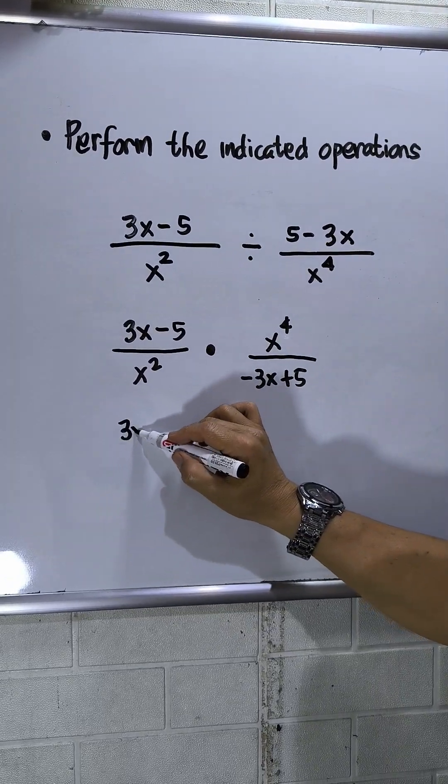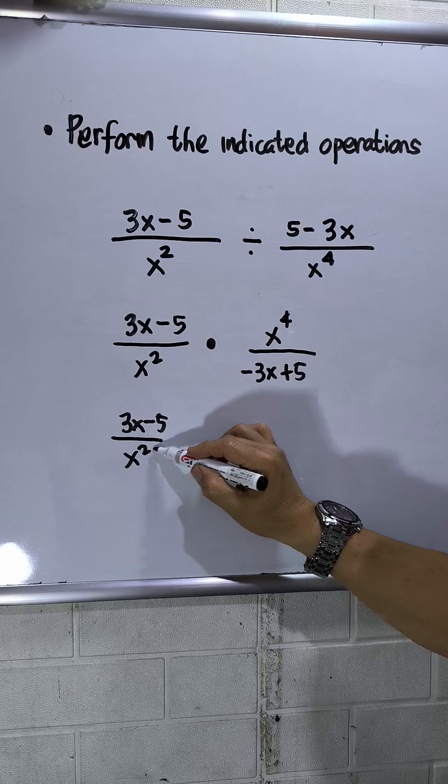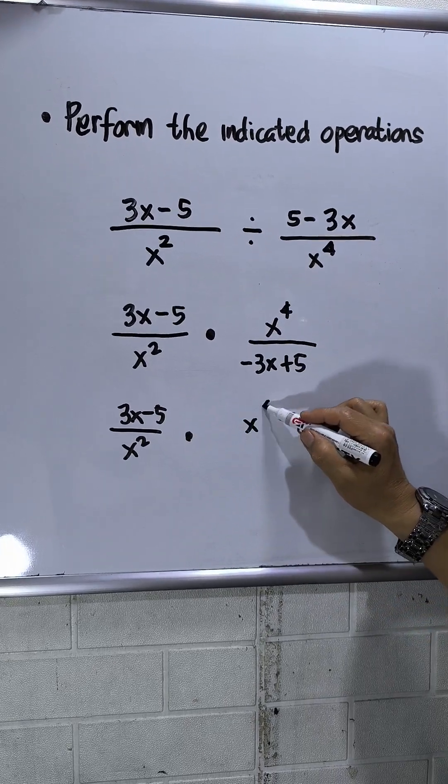Okay, so copy again, 3x minus 5 over x squared times x to the 4th.